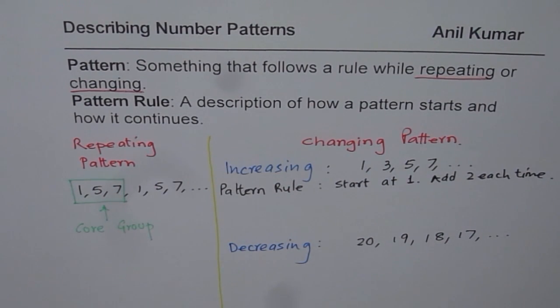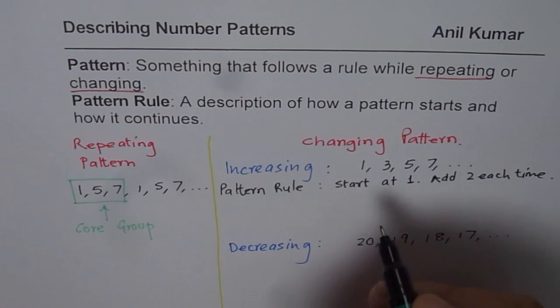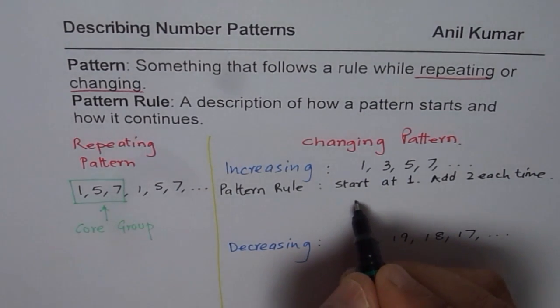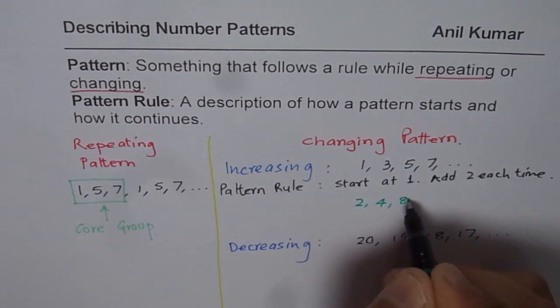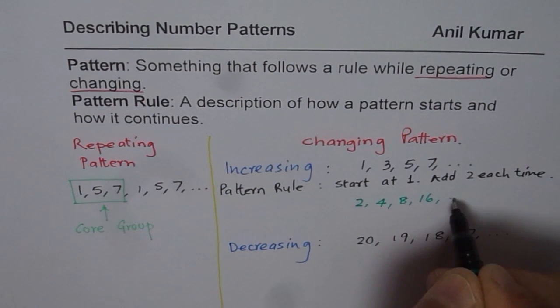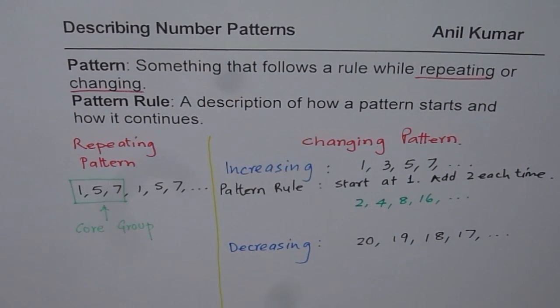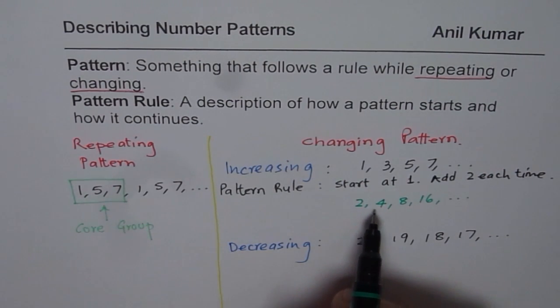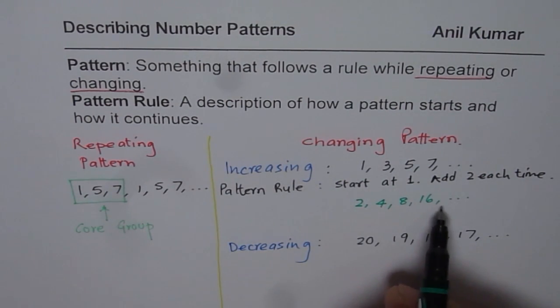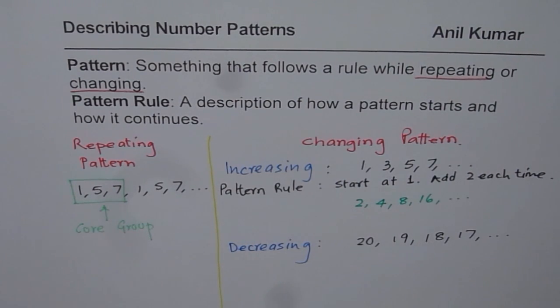So if you follow this rule you create this increasing pattern 1, 3, 5, 7. Now let me give you one question for you to write down the pattern rule. This time we will do 2, 4, 8, 16 and so on. Can you write down the pattern rule for this one? Start at 2 and then do what? Let me leave it for you for the time being.